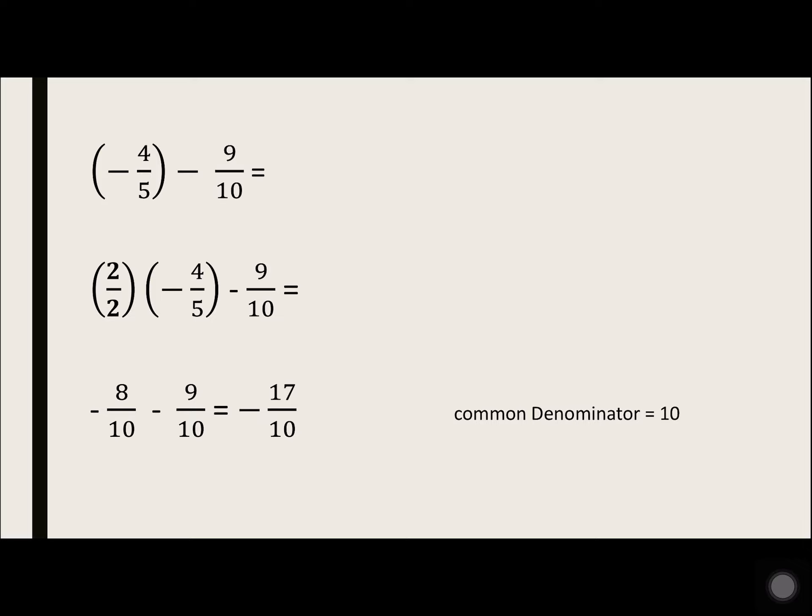Negative 4 over 5 minus 9 over 10 – 10 would be your common denominator, because 5 and 10 can go into 10. So the fraction on the left has a 5 on bottom, so we need to multiply it by 2 to get 10.